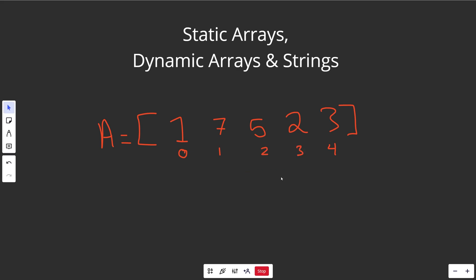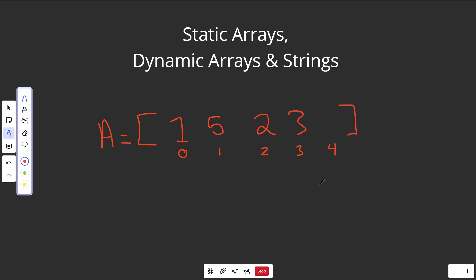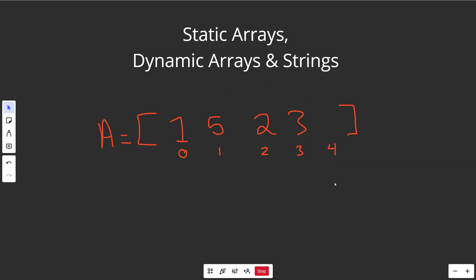If you wanted to delete an element, you need to keep the array as a contiguous block of memory — you can't have a gaping hole. So a reverse shift is required: move elements over to fill the gap. That deletion is O(N) in the worst case because you're moving everything over. You end up with an empty slot at the end, represented as X — the block remains contiguous, but deletion is still O(N).